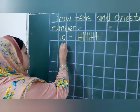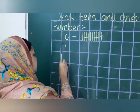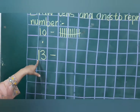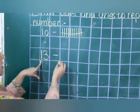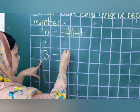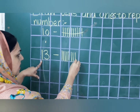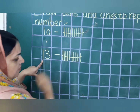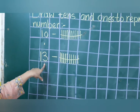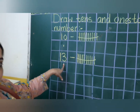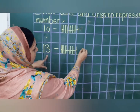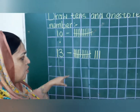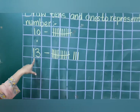Now our next number is 13. So what do you see on tens place? One. That means we will draw one bundle — bundle always has ten sticks, we will tie a rubber band. Now what is there on ones place? Three. That means we are going to draw three loose sticks, three standing lines more.